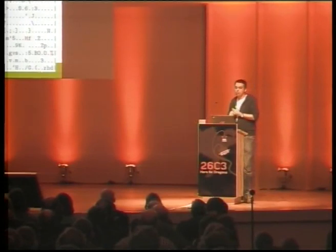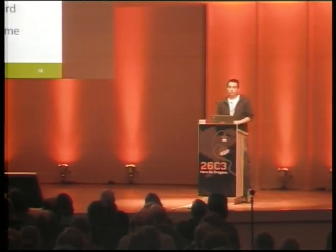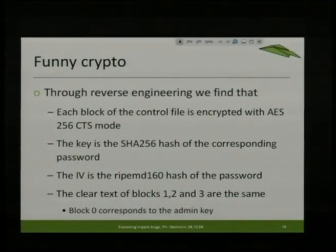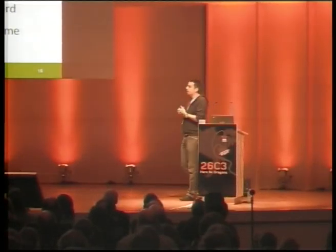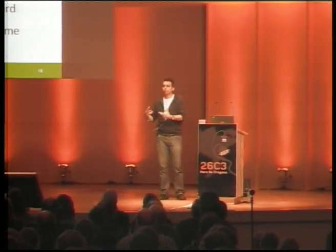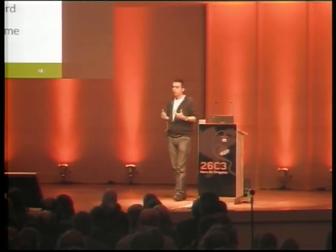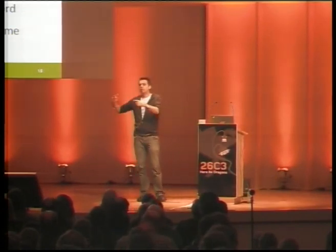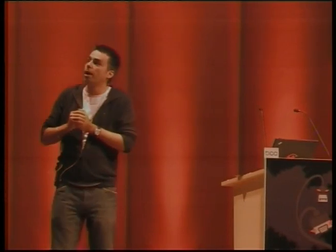If you do reverse engineering and go into the code step by step in the debugger, you find out how those blocks are encrypted. They use AES-256 in CTS mode - a mode not used very often where you don't need to do padding, very much like CBC. You need a 256-bit key, and that key is the SHA-256 hash of your password. When you type a password, it's hashed with SHA-256 and that becomes the key for encrypting your data. The encryption algorithm also needs an initialization vector, and what they take is the RIPEMD-160 hash of your password - so it also depends on your password.